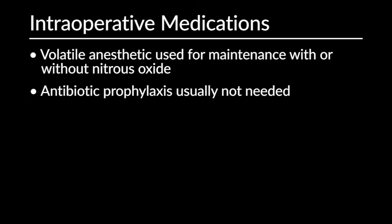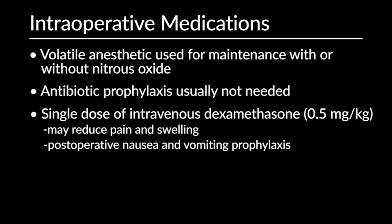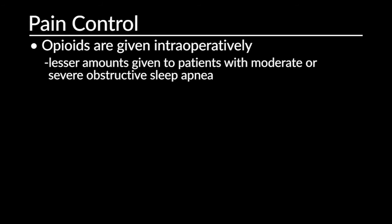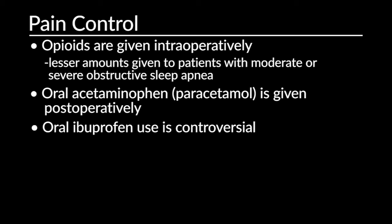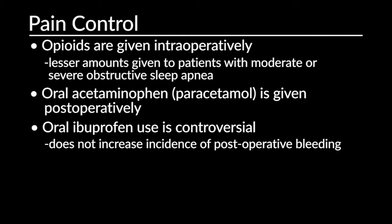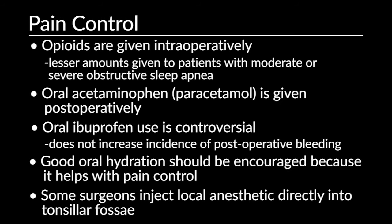A volatile anesthetic is used for maintenance with or without nitrous oxide. Antibiotic prophylaxis is usually not needed, but a single dose of intravenous dexamethasone is helpful as it may reduce pain and swelling and also acts as postoperative nausea and vomiting prophylaxis. Pain control is achieved by several methods: opioids are given intraoperatively with lesser amounts given to patients with moderate or severe obstructive sleep apnea. Oral acetaminophen or paracetamol is given postoperatively. Oral ibuprofen use is controversial, but it doesn't seem to increase the incidence of postoperative bleeding. Good oral hydration should also be encouraged postoperatively. Some surgeons inject local anesthetic directly into the tonsillar fossae during the case.